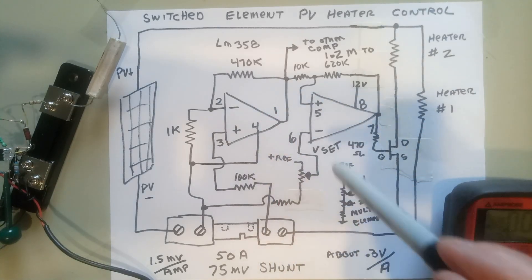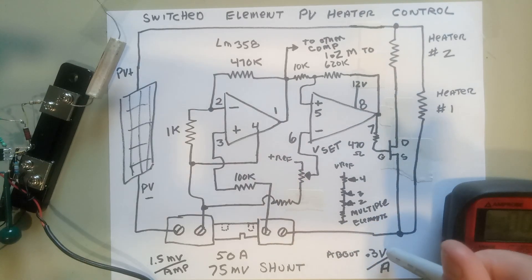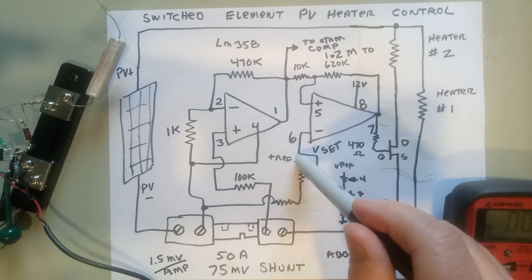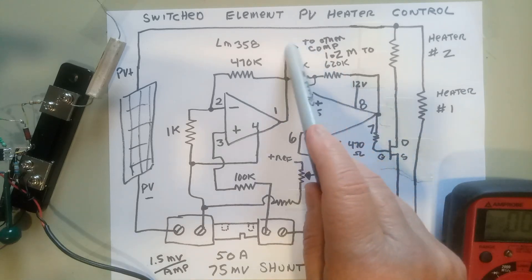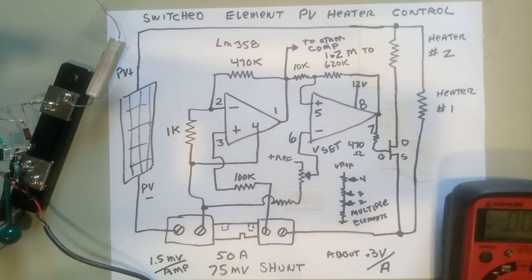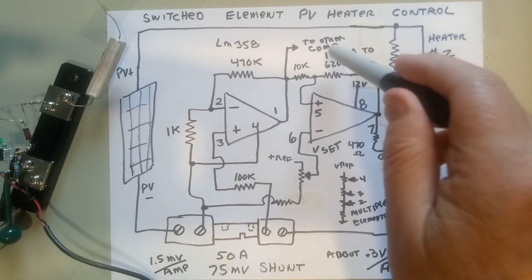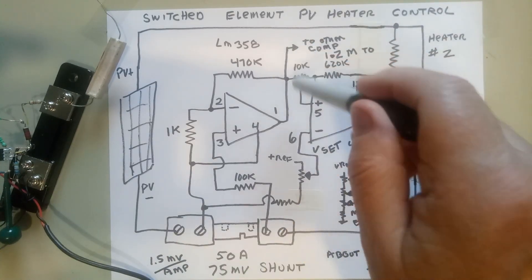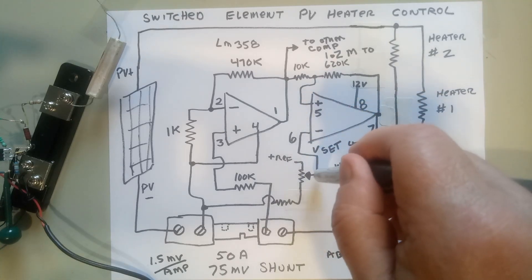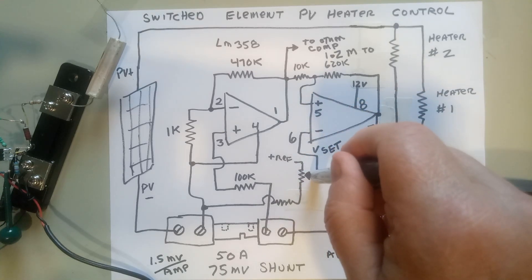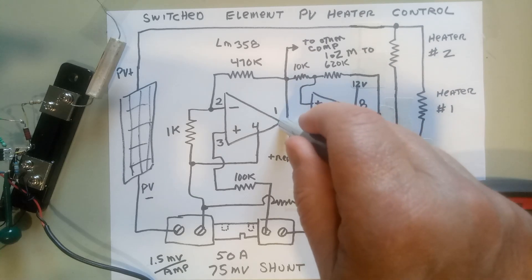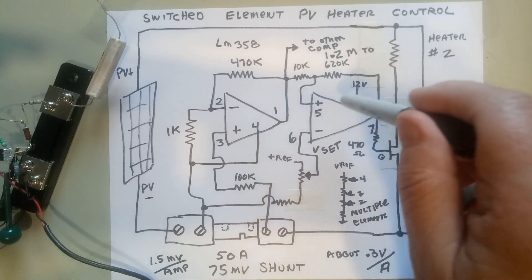You could power this off a wall wart—a lot of wall warts that are switching supplies work fine at 60 or more volts. That could power this and could be a reference voltage. You want to come out with some voltage here which compares to the voltage you want to see when you switch.